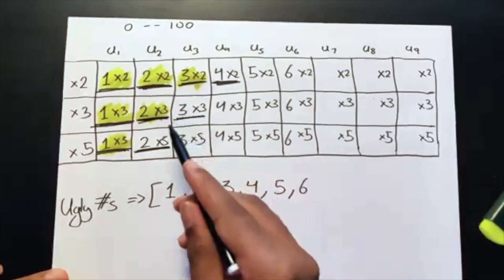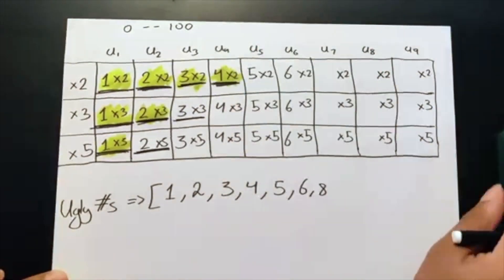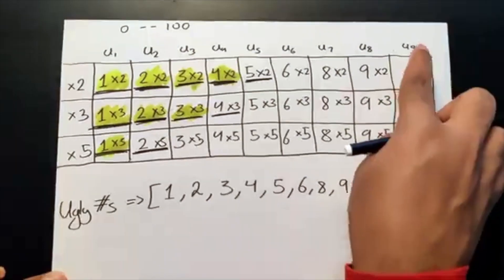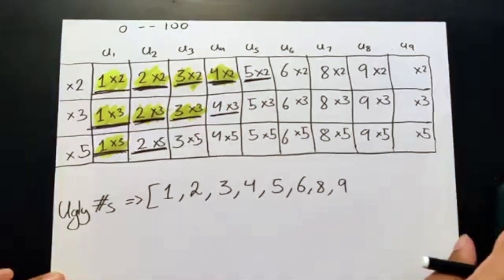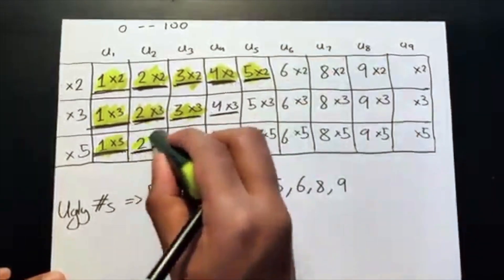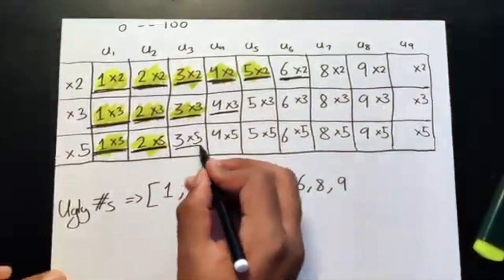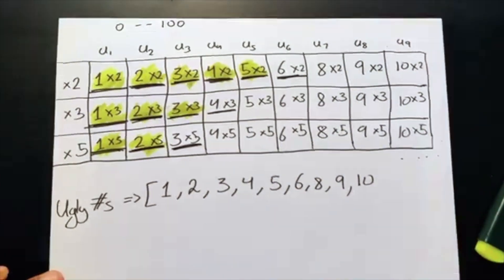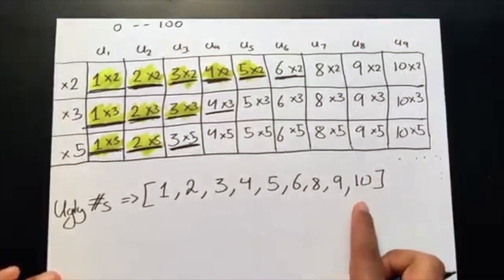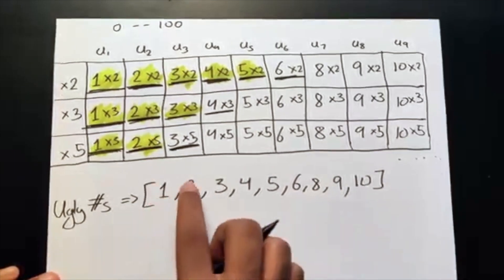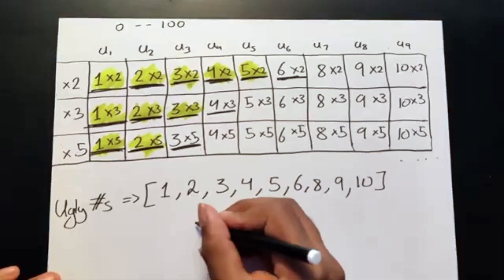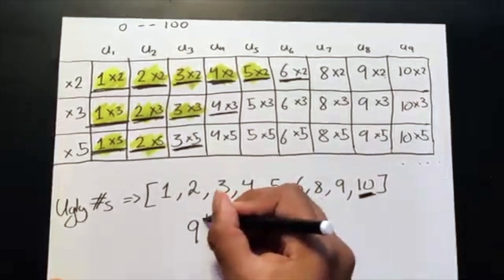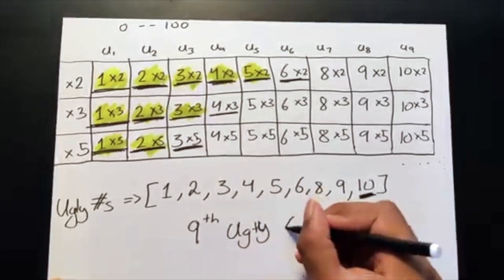Continuing: we get 8, then 9, then for the ninth element we have 10, 12, and 10 — again two matching values. We remove both, advance both pointers, and add 10. So our ugly numbers list is 1, 2, 3, 4, 5, 6, 8, 9, 10 — length 9. The last element, 10, is the ninth ugly number.